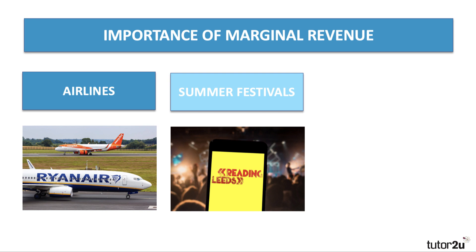Summer festivals — the likes of Reading and Leeds, Boardmasters, and of course Glastonbury — sell out within just a few minutes or hours of tickets going public. So in a sense, once you've chosen your price, you've sold out of tickets and there aren't many extra tickets to be found. Occasionally they might release some extra tickets, but often with summer festivals the actual price at issue is essentially what generates the revenue. It's quite hard for summer festivals to sell extra tickets, so marginal revenue is perhaps less important there. Although there are secondary ticketing sites for people who can't make the event and want to sell their ticket.